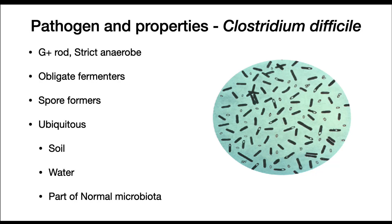Our next pathogen is Clostridia, and in the cases here, we're going to be talking about Clostridium difficile. These are gram-positive endospore-forming strict anaerobes and obligate fermenters. Because of their spore formation, they are ubiquitous in the environment and can be very difficult to deal with in the hospital setting. Clostridia in the soil live as saprobes, degrading organic material. They can also be found in water and as part of the normal microbiota in humans.